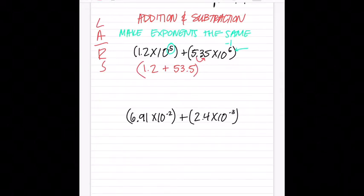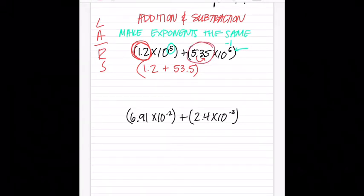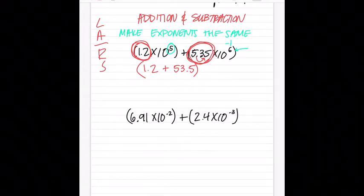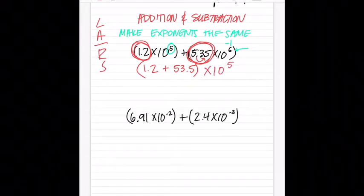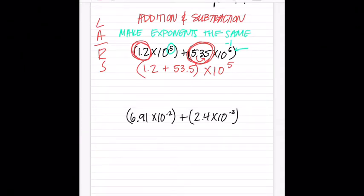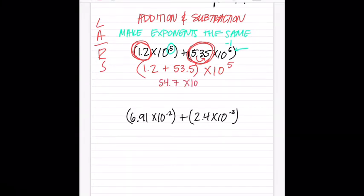So I rewrite this as 1.2 plus 53.5 — I'm pulling out the main numbers and combining them, but I had to make the exponents the same and move the decimal first. Then I just do times 10 to the fifth — I made them both five, so I keep it at five. That gives me 54.7 times 10 to the fifth.